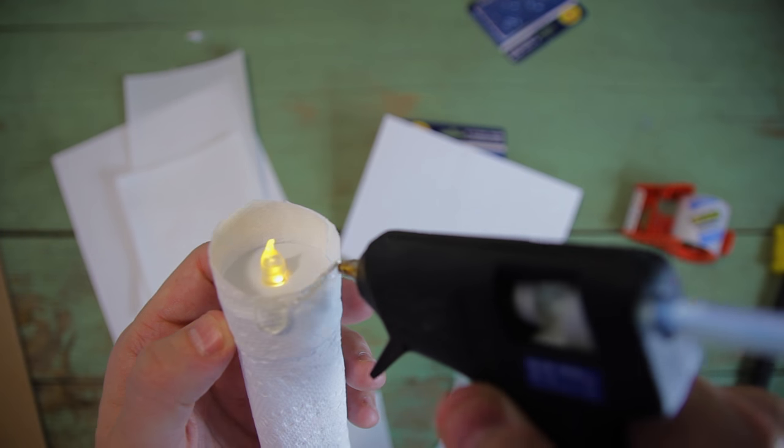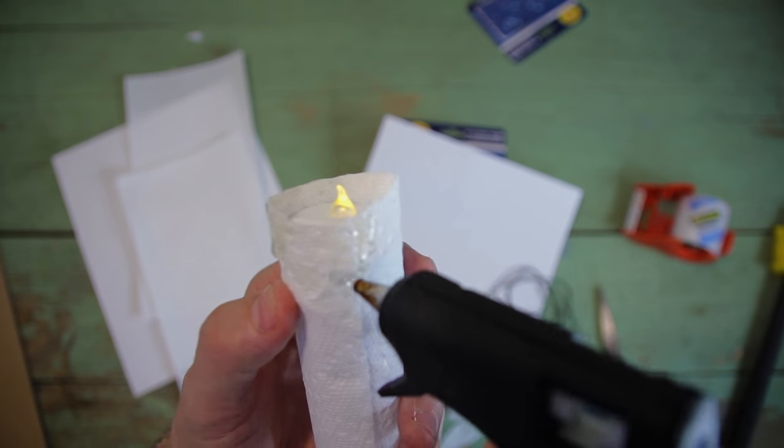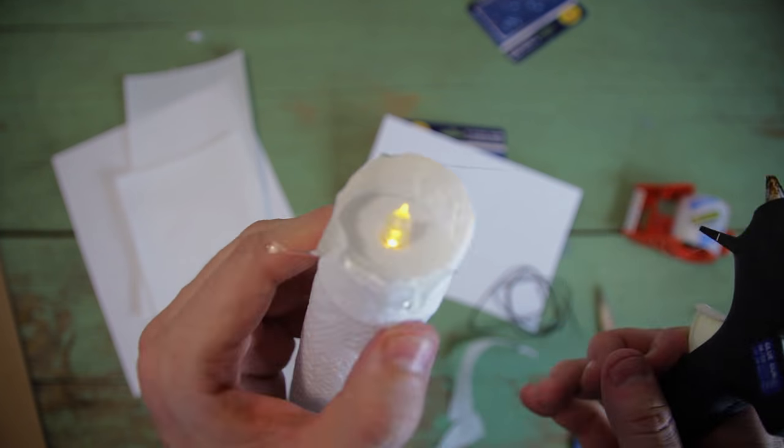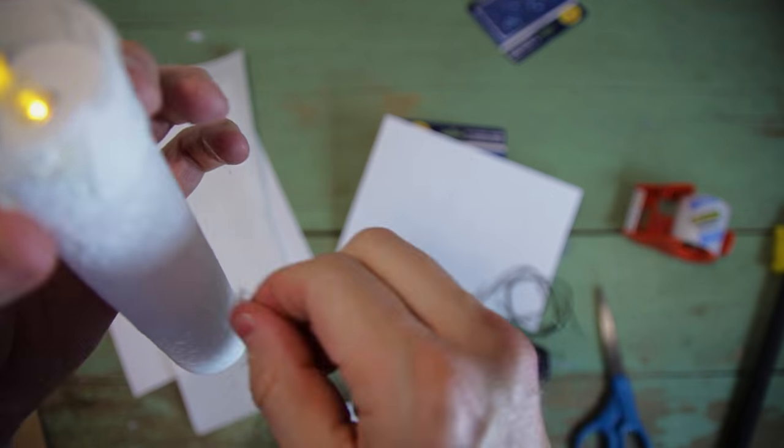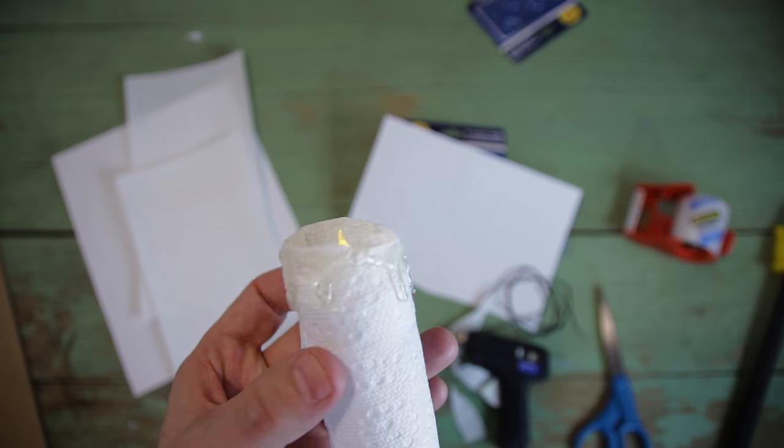Also, you can experiment with hot glue and add a melted wax look on the top here. I noticed that it was really hard to see the effect in the dark and it didn't seem to add much for all the effort it took. But feel free to try it if you want. Be careful, hot glue's hot.